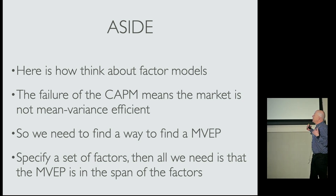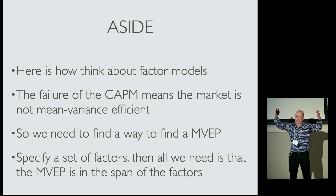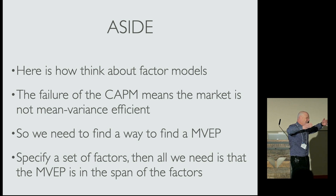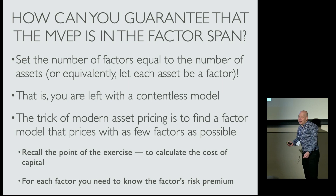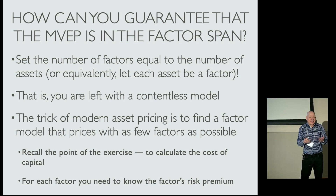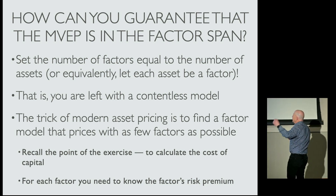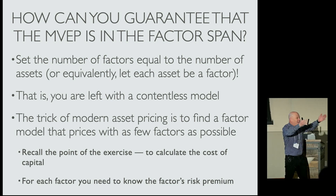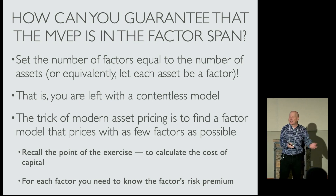That's how I think of factor models. The failure of the CAPM means the market is not mean-variance efficient. So what we need to do is find the mean-variance efficient portfolio — everything will work. Instead of just specifying the market, let's specify a range of factors. Obviously, the more factors you specify, the more likely the mean-variance efficient portfolio will be in the span. How can I guarantee that? Set the number of factors equal to the number of assets — it has to be in the span. But the problem is you have a contentless model at that point. You could make each factor the return of each asset — it'll work perfectly, but we're back to square one. We can't estimate the expected return of the asset.